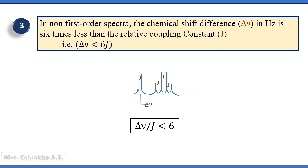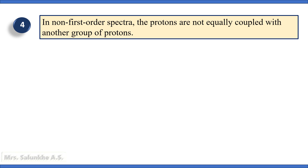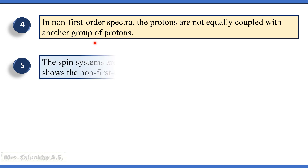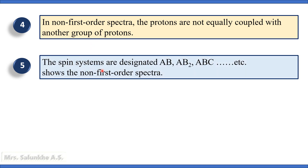The fourth criteria is that in non-first order spectra, the protons are not equally coupled with another group of protons. The coupling between two sets of protons is not the same, therefore it does not obey the N plus 1 rule. The fifth criteria is that the spin systems are designated as AB, AB2, ABC, etc. In these alphabets, A, B, C are nearer to each other, which indicates their chemical shift values are comparable or nearer to each other, and such type of system shows non-first order spectra.